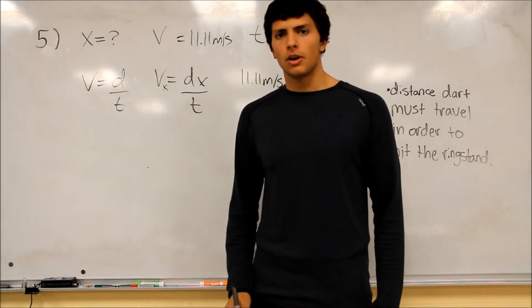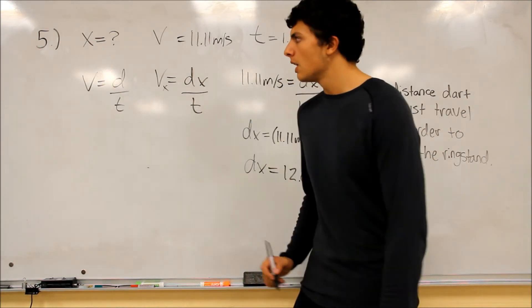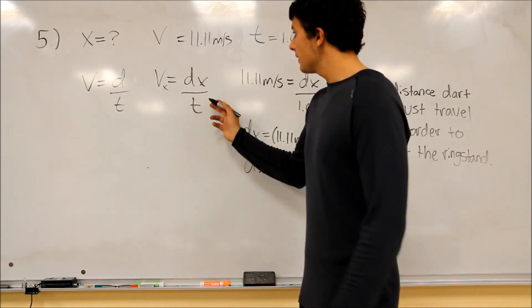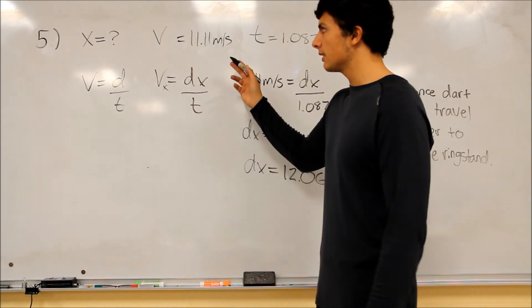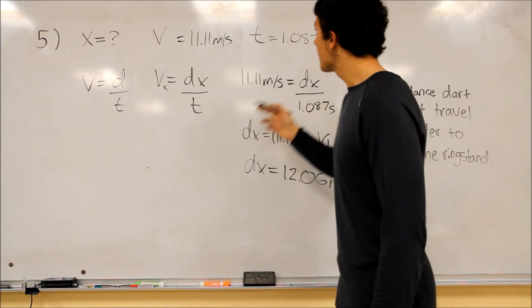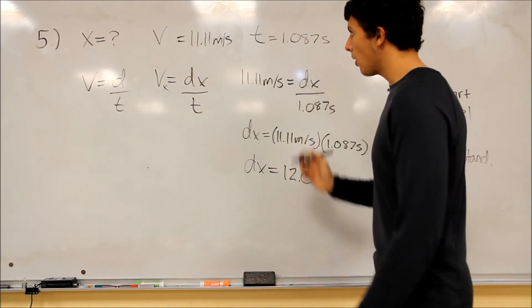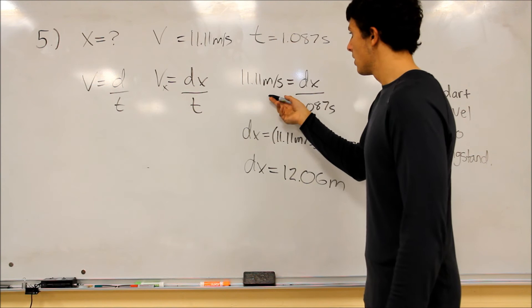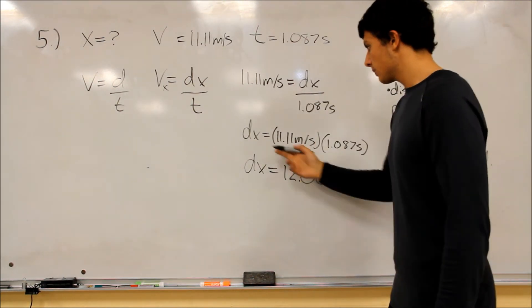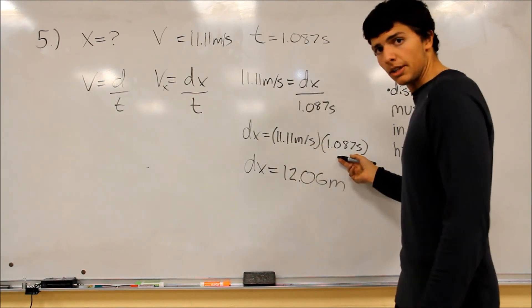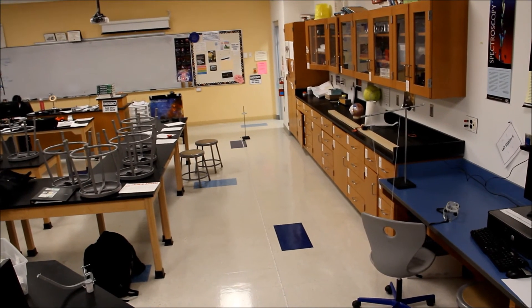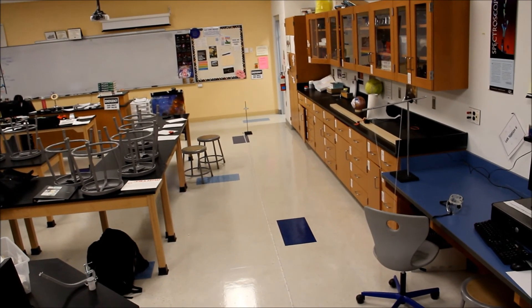Next, we must calculate the distance at which the dart must travel in order to hit the designated target. Using the basic formula V equals D over T, we derive that dx equals vx times T. We have our velocity of 11.11 meters per second and our time of 1.087 seconds. Plugging in, dx equals 11.11 times 1.087, therefore equaling 12.06 meters. Then, using the calculated x value, fire the gun at that distance at your given angle. Make sure the gun is at the proper distance — in our case, 12 meters — and the protractor is set at 40 degrees so the shot is accurate.